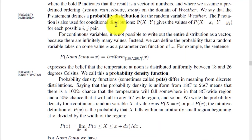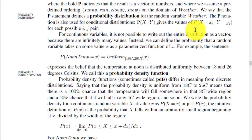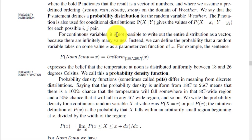The P notation defines a probability distribution for a random variable. The P notation is also used for conditional distributions: P(X|Y) gives the values of P(X=xᵢ | Y=yⱼ) for each pair i and j.